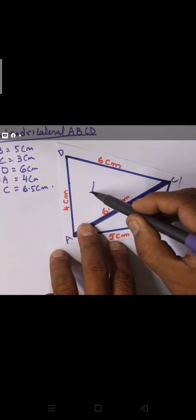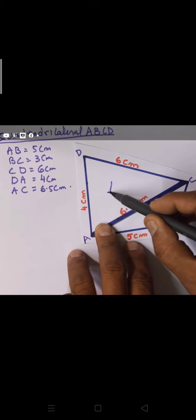Now kids, as I have told you, always take the biggest measurement as your base to start the construction. Whatever the figure is, take the greatest measurement given. Here we have 5 cm, 3 cm, 6 cm, 4 cm, and 6.5 cm — so the greatest is 6.5 cm. We will start by drawing 6.5 cm as our base.